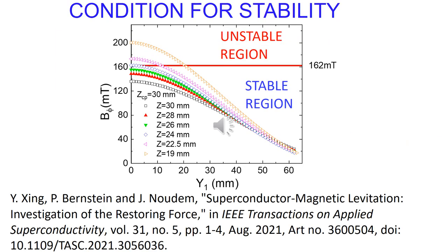This slide shows the mean value of the applied field in the superconductor as a function of its lateral distance to the magnet for various Z values. The model permits to determine stable and unstable regions.